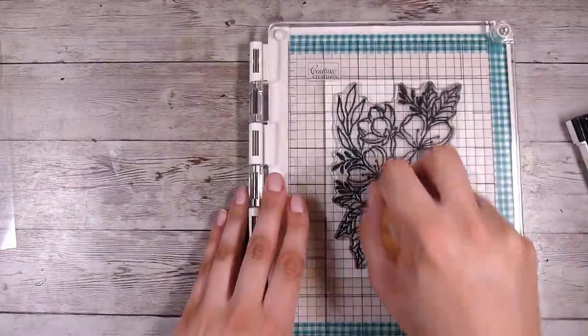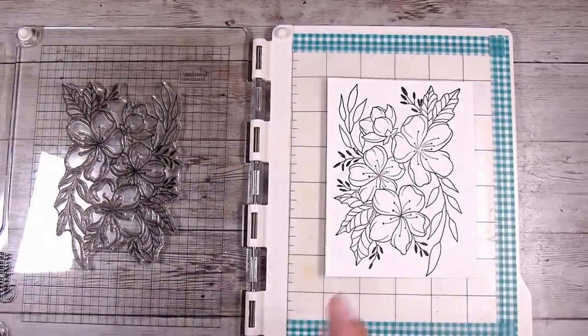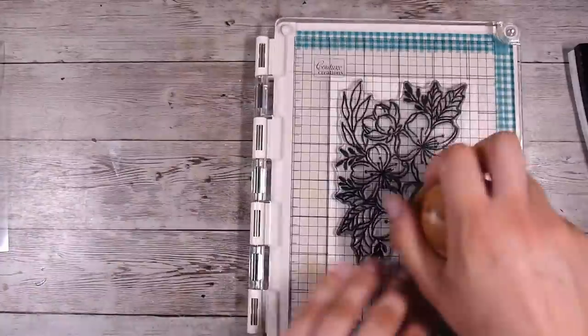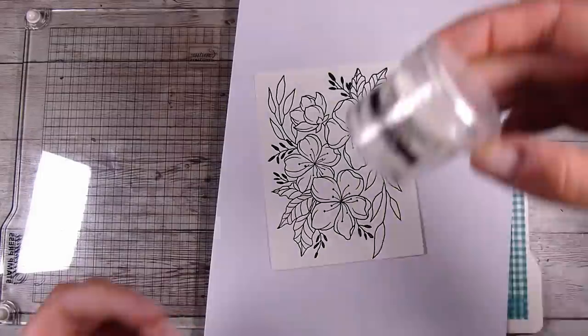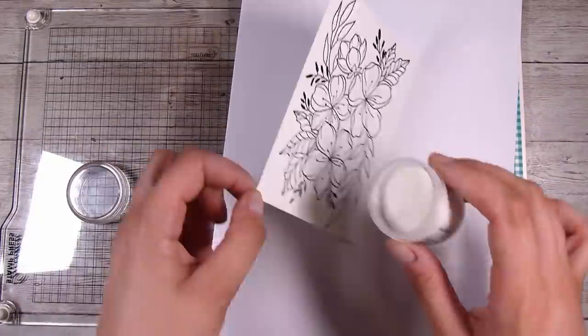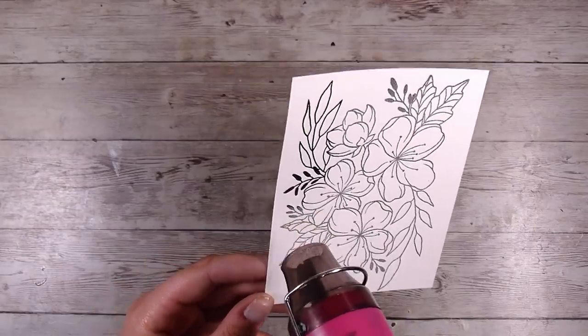And I'm going to use this again in another little different way today. So I'm starting off by stamping it with some Versafine onyx black ink. I have it in my little stamping platform. This is the Couture Creations stamping platform and it is my very very favorite for so many good reasons.